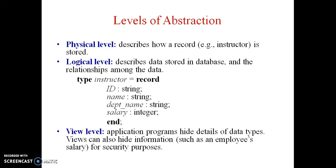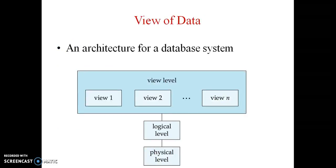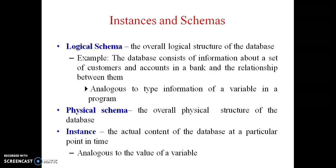What are the levels of abstraction present in a database? The physical level, logical level, and view level — these are the levels of architecture of the database management system. What is an instance? At a particular moment, the data stored is called an instance. Schema and instance: overall design is divided into three types — logical schema, physical schema, and instance. Logical schema is the overall logical structure of the database, for example, information about customers and accounts in a bank. Physical schema is the overall physical structure. Instance denotes the actual content of the database at a particular moment.